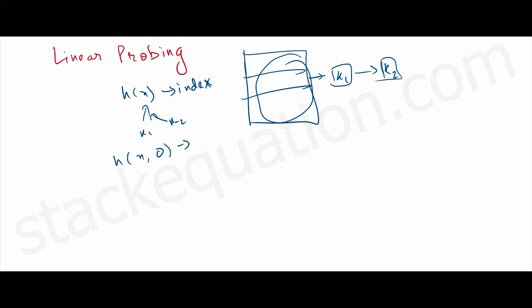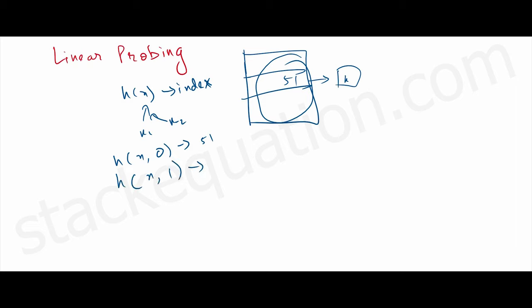At the zeroth attempt, for input x, the hash function returns index 51. But if an element is already present at 51, it will take another attempt — the first attempt — and return index 52. If there is no element at 52, it will place x at 52. This was a typical collision resolution scenario discussed in the previous video.